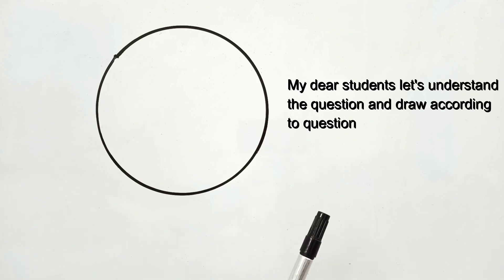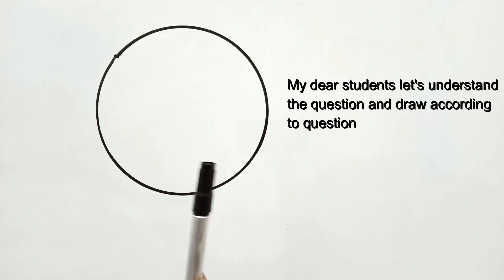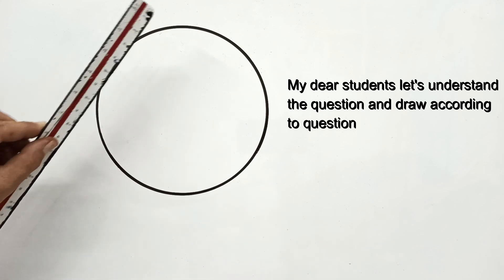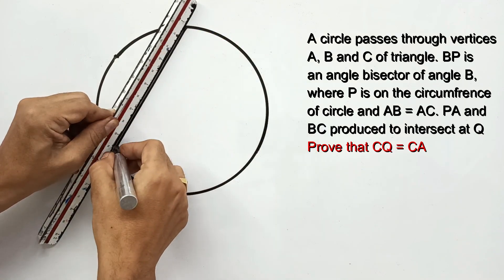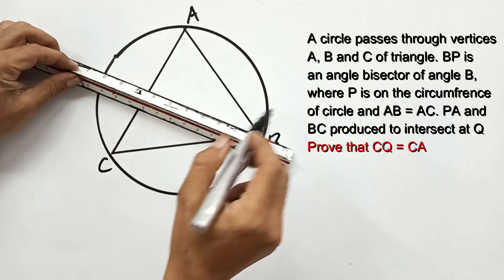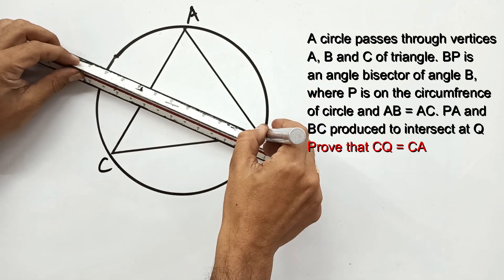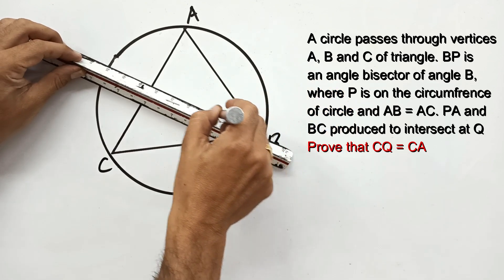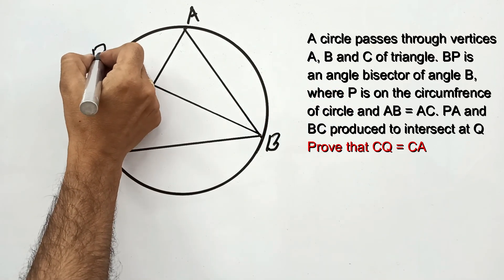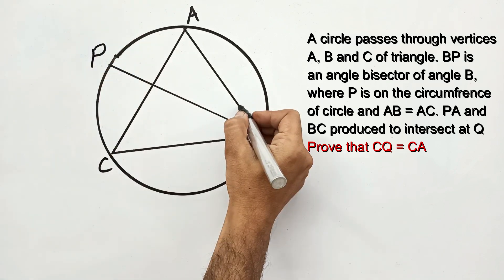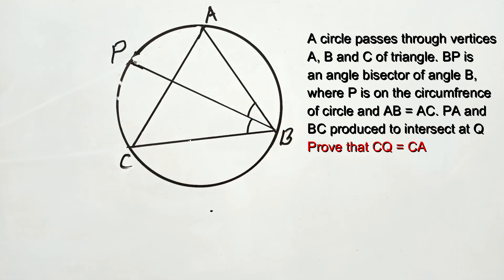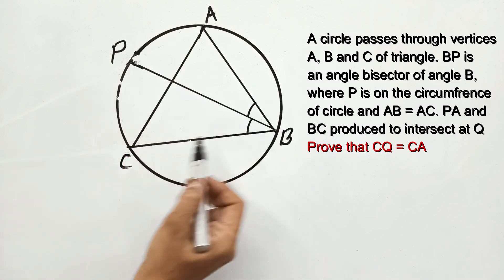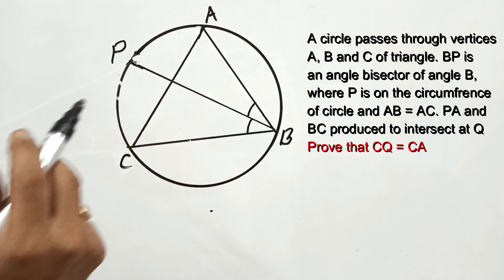My dear student, this question is very important and conceptual. Let us understand the question step by step with drawing the diagram. Given that ABC is a triangle. Next it is given that BP is an angle bisector, where P is a point on the circumference of the circle. Angle bisector means these two angles are equal. Next it is given that PA and BC are produced to intersect at Q.